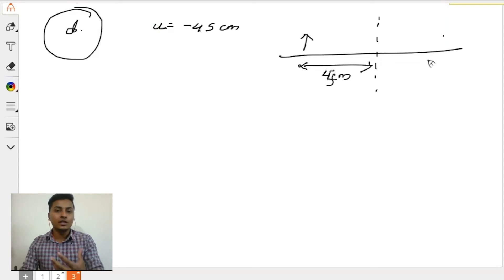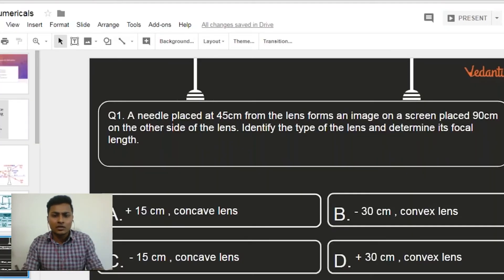Correct, it does not. So Pranav, don't you think here itself we have got the answer? Yes, we have got the answer here itself that it cannot be a concave lens. So when I look back I can find out that option A and option C are wrong. So option A and option C are out of the picture.